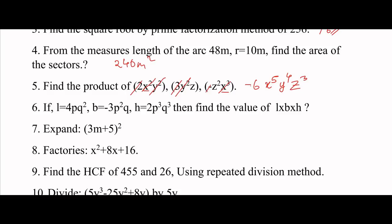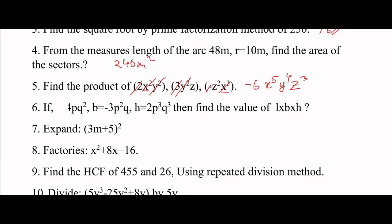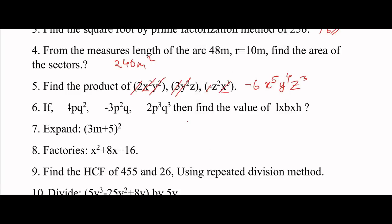In the 3 terms we multiply. For signs: there is one minus, so the answer is minus. For constants: 4 × 3 × 2 = 24, so here is -24.